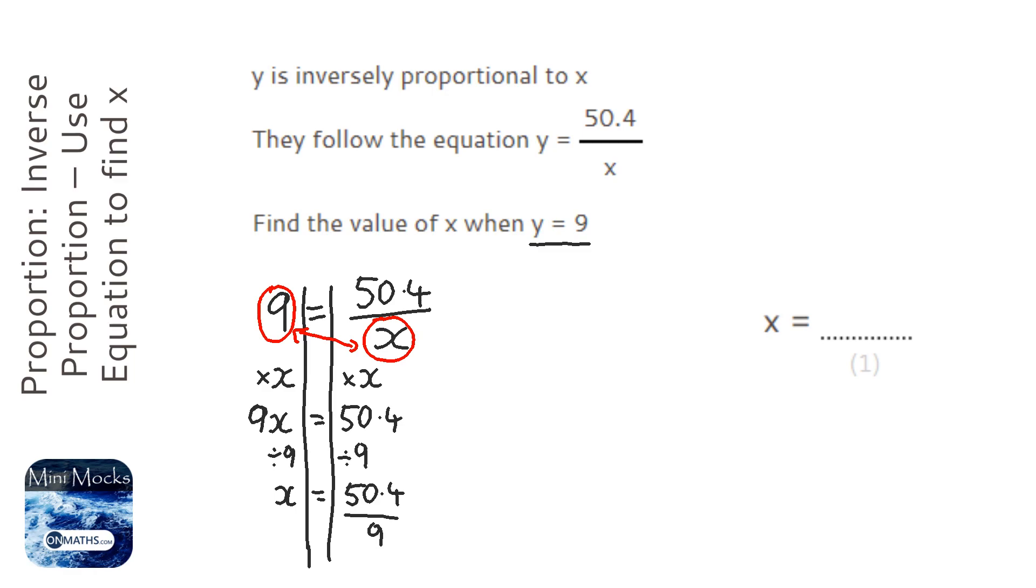So the answer would be, I type in 50.4 divided by 9 and I get the answer 5.6. And I'll always check it, so 50.4 divided by 5.6, and it gives me the answer of 9.